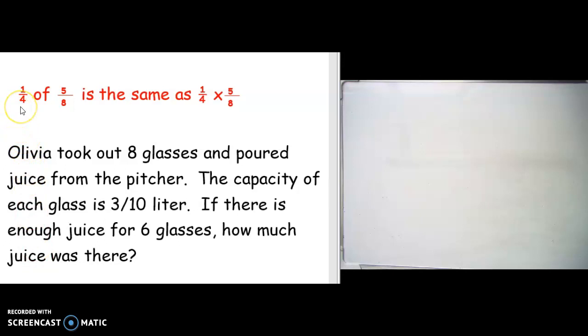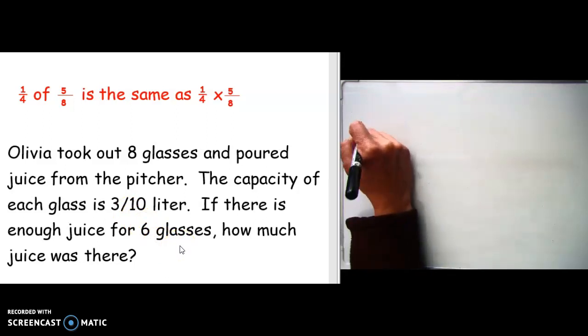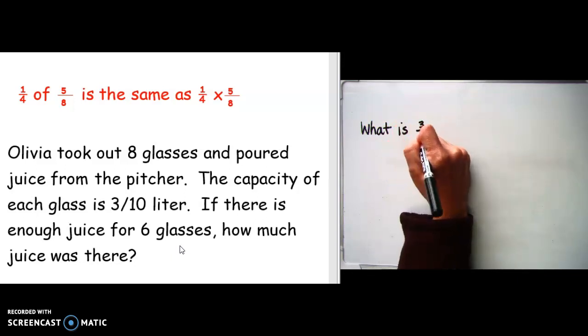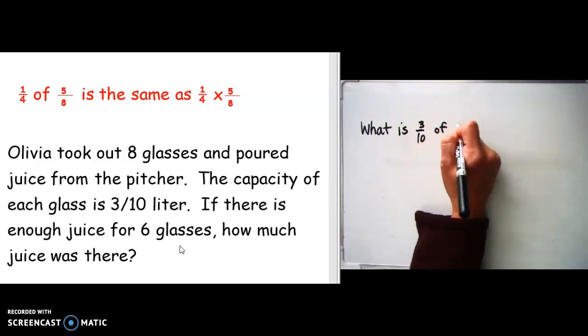At the top I left one-fourth of five-eighths is the same as one-fourth times five-eighths. This was from our previous problem to remind us that of means the same as multiplying. Now Olivia had eight glasses. She had some juice in the pitcher and she poured it into the eight glasses. Each glass can hold three-tenths a liter, and she could only fill six glasses.